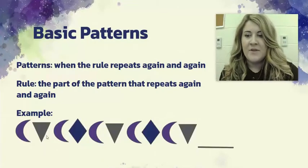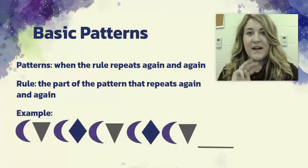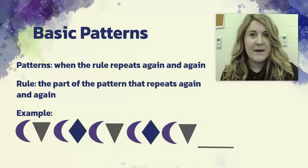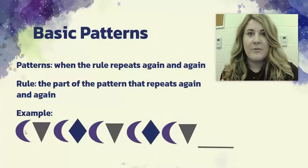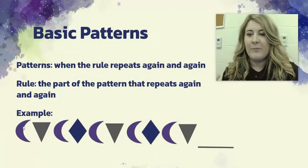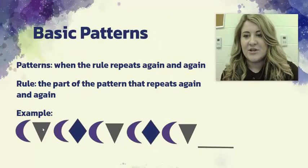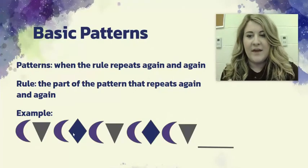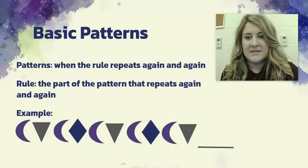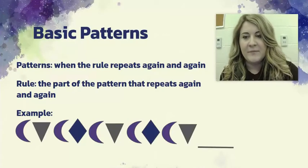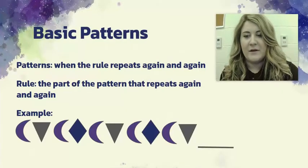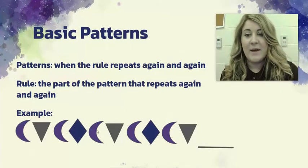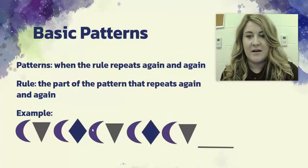Next we're going to look at a different pattern. We have three shapes here, which means we're going to have three letters — same idea. We figure out where the rule starts and label it with letters. We have: purple moon, gray triangle, purple moon, purple diamond. Then we see the pattern starts over again with purple moon.